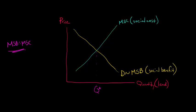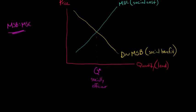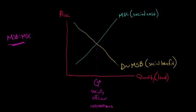So this is our, we'll call it the socially efficient or socially optimal amount of lead. And let's say that that's 100,000 tons. I have no idea if that's a realistic amount, but there's 100,000 tons of lead that is smelted. That is optimal.